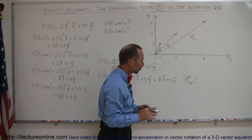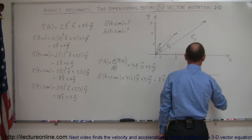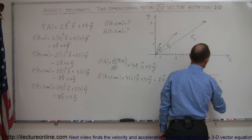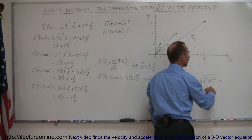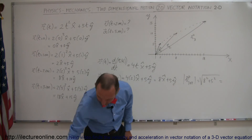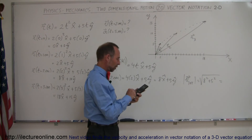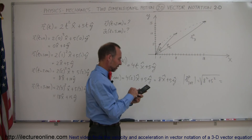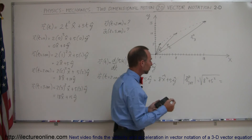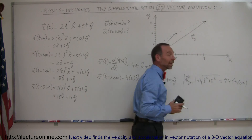If you want the magnitude of the total velocity, you use the Pythagorean theorem: v_total equals the square root of 8 squared plus 5 squared, which is the square root of 64 plus 25, equal to the square root of 89, which is 9.4 meters per second in standard units.